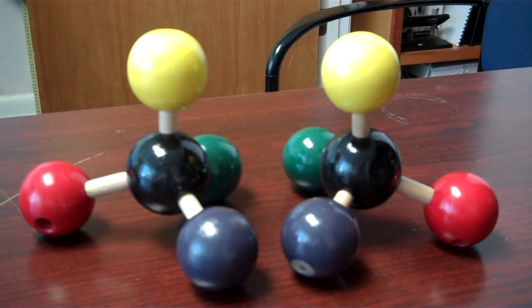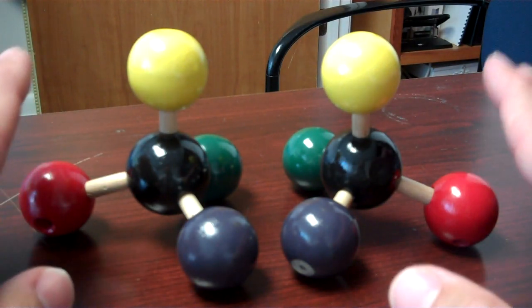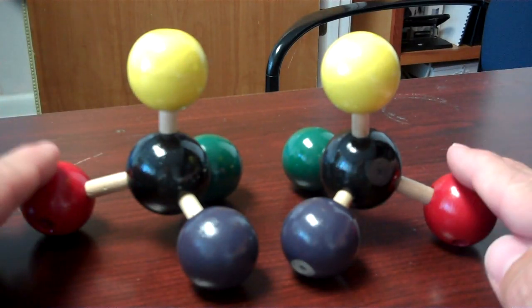This short video is to explore the relationships between two molecules that are non-superimposable mirror images of each other, and we call such molecules enantiomers. Three-dimensional models like these are great for establishing these relationships because you can manipulate them in actual three-dimensional space.